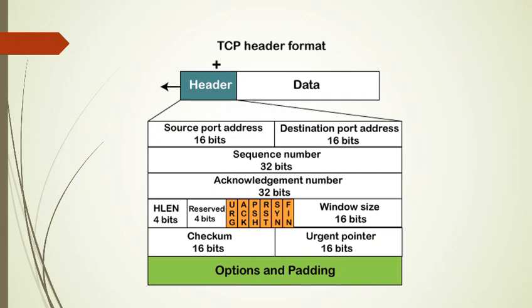Shown here is the structure of the TCP header. It consists of a header followed by data. The header contains: source port, destination port, sequence number, acknowledgement number, header length, reserved bits, window size, checksum, urgent pointer, and other options and padding.